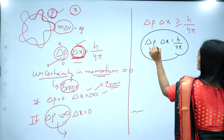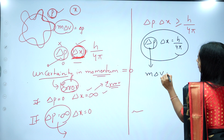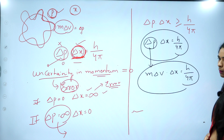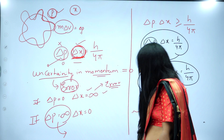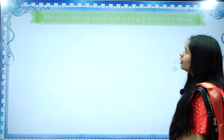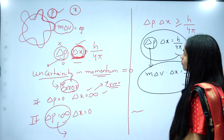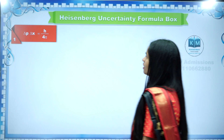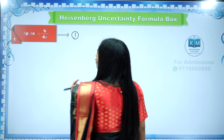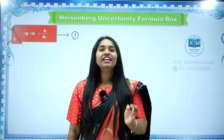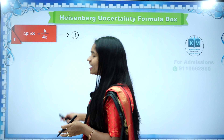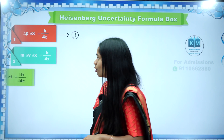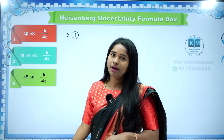And P is nothing but m delta v. So m delta v into delta x is equal to h by 4 pi is another formula. Now I am going to show you a few more formulas. Formula number one: delta P into delta x is equal to h by 4 pi. Formula two: delta m into delta v into delta x is equal to h by 4 pi. Formula three: delta E into delta t is equal to h by 4 pi.